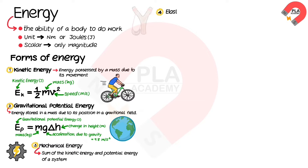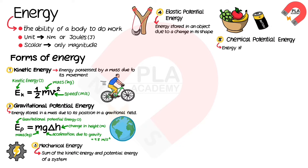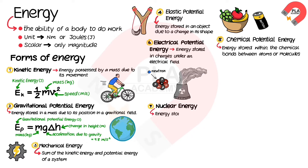Mechanical energy is the sum of the kinetic energy and potential energy of a system. Elastic potential energy is the energy stored in an object due to changes in its shape. Chemical potential energy is the energy stored within the chemical bonds between atoms or molecules. Electrical potential energy is the energy stored in charges under an electrical field. Nuclear energy is the energy stored in the nucleus.